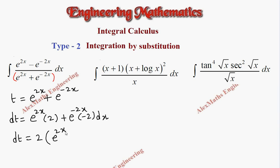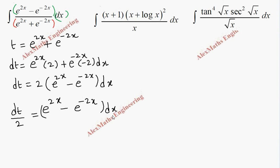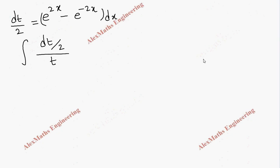By taking 2 common we have e^(2x) minus e^(-2x) dx. So totally we got the numerator e^(2x) minus e^(-2x) into dx. Carrying the 2 to the denominator, this is dt by 2 equal to e^(2x) minus e^(-2x) dx. We are going to replace this in the question, which is integral of dt/2 divided by t.